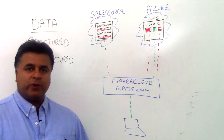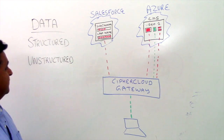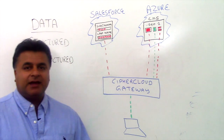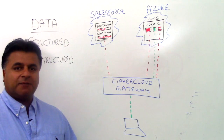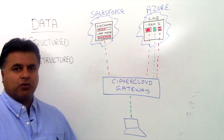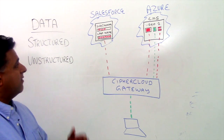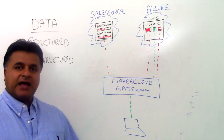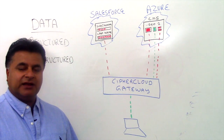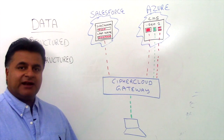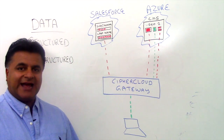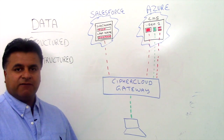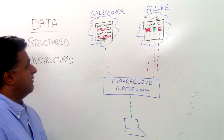I'd like to start out with the first classification of data that we highlighted here, called structured data. Whenever we talk about structured data, it's really the core of what we do with our applications such as Salesforce, who we partner with, and in the context of what we actually protect. Structured data can be thought of as letters and numbers as they're combined to form a word or other numeric values.